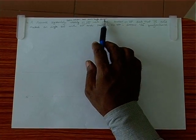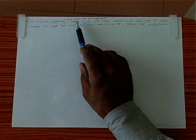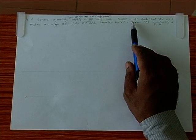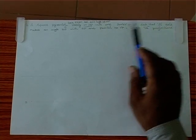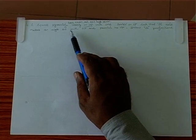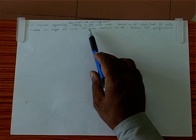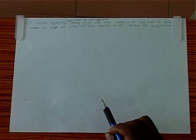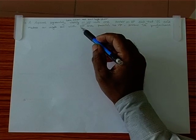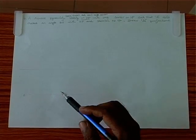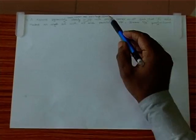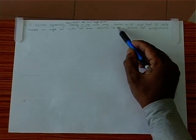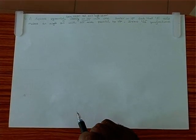The base side is 30mm and axis length 50mm, resting on HP with one corner on HP such that its axis makes an angle of 30 degrees with HP and is parallel to VP. Draw its projections. Since the solid is resting on HP, we draw the top view first.